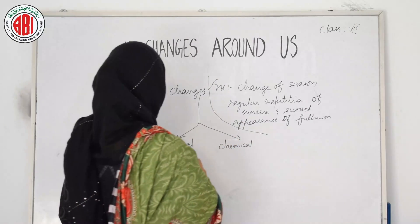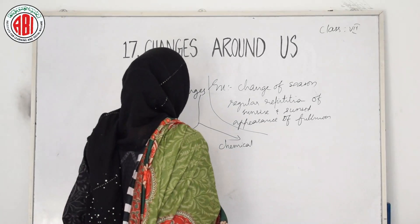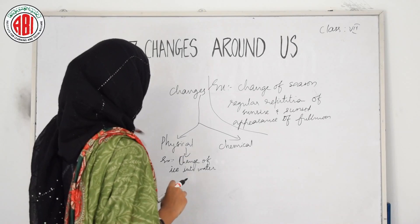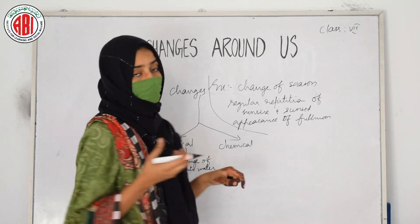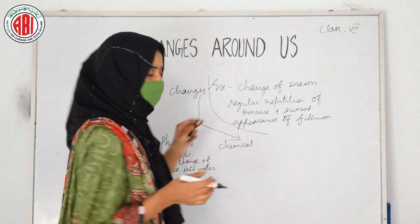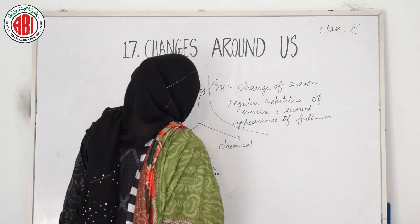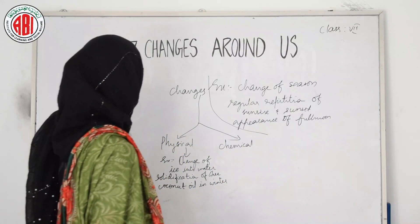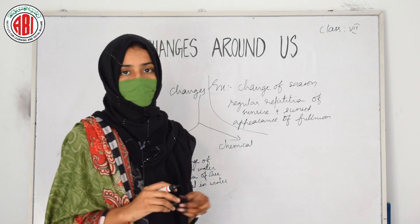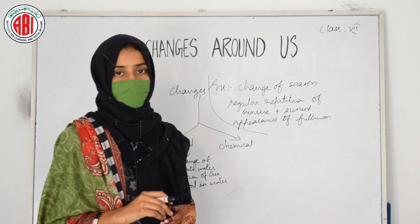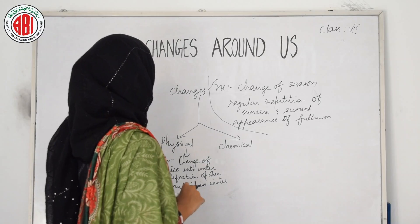Let us take some examples to understand physical and chemical changes more clearly. For physical changes, we can take the example of melting of ice — change of ice into water. This is a physical change; no new product is formed, only the state of water changes. Another example is solidification of ghee or coconut oil in winter. These show changes in state, shape, or size but do not form any new product.